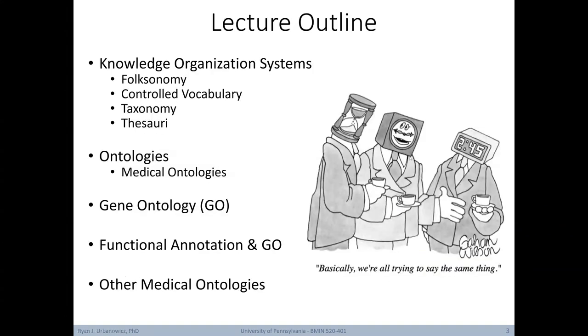In today's lecture, we're going to start by covering some different knowledge organization systems, including folksonomies, controlled vocabularies, taxonomies, and thesauri. Then we'll take a look at a more formal knowledge organization system, the ontology, with particular focus on medical ontologies. We'll explore one of the most popular biological ontologies, the Gene Ontology or GO. Then we'll look at how GO can be used to conduct functional annotation, and we'll end by talking about some other specific medical ontologies.